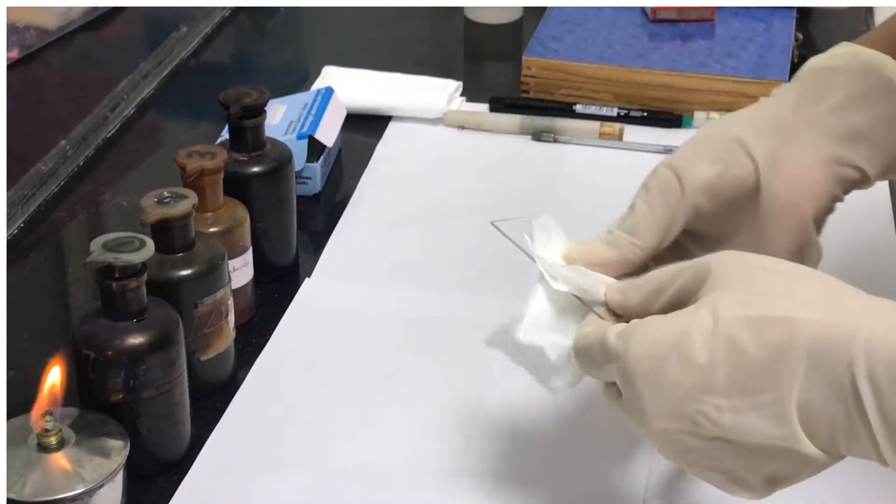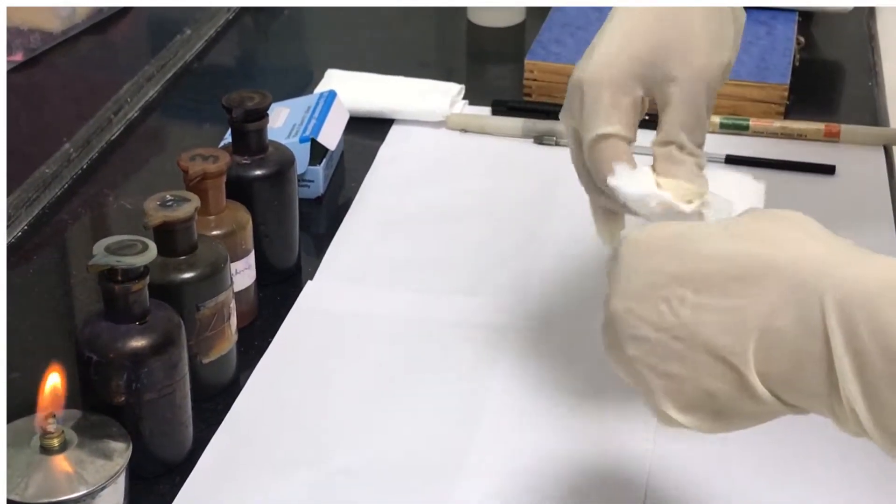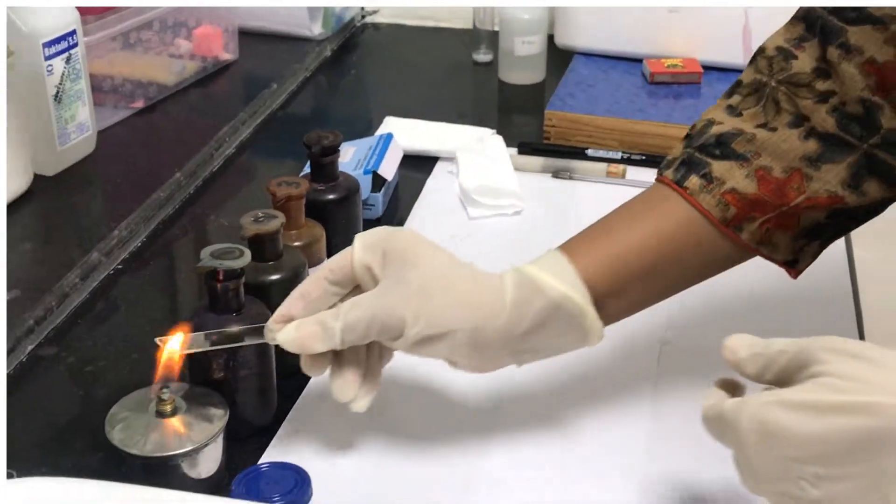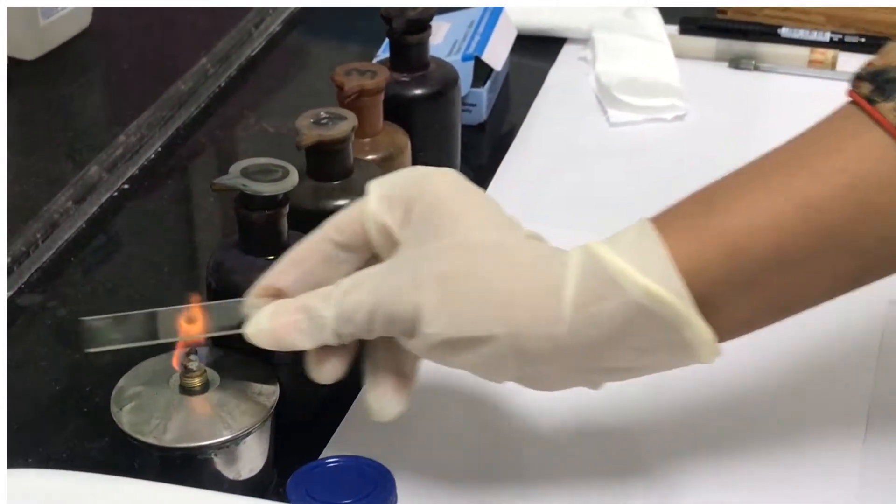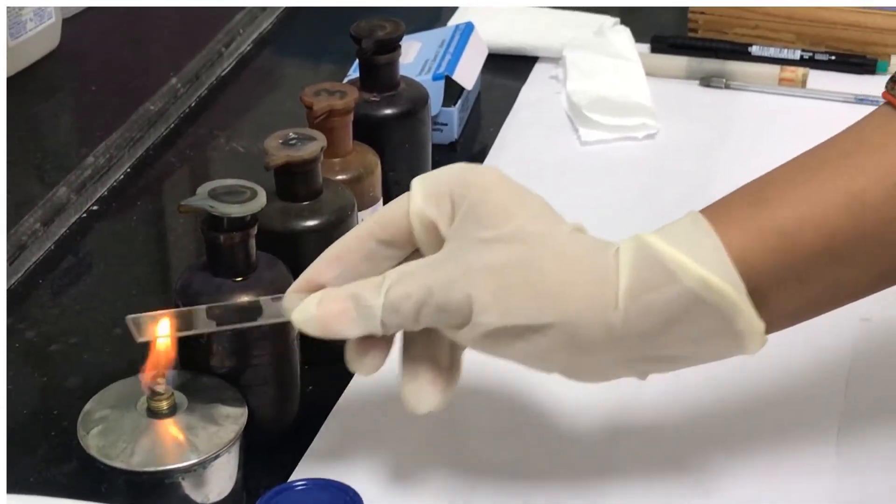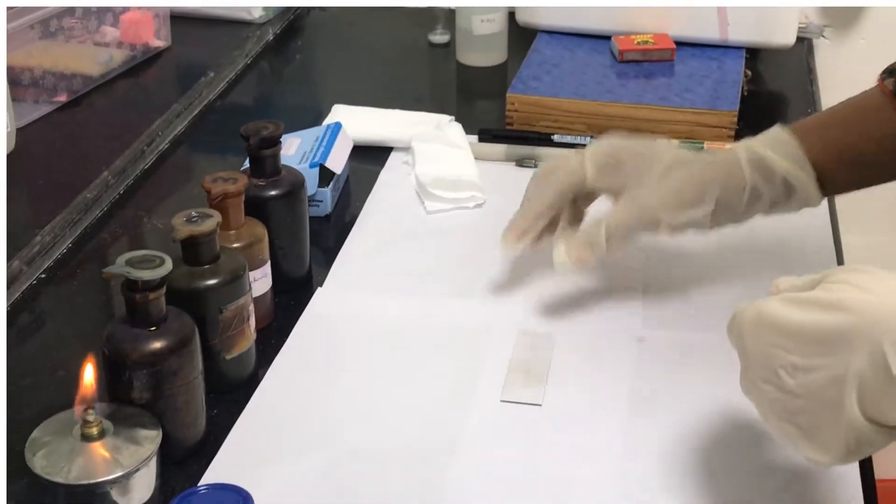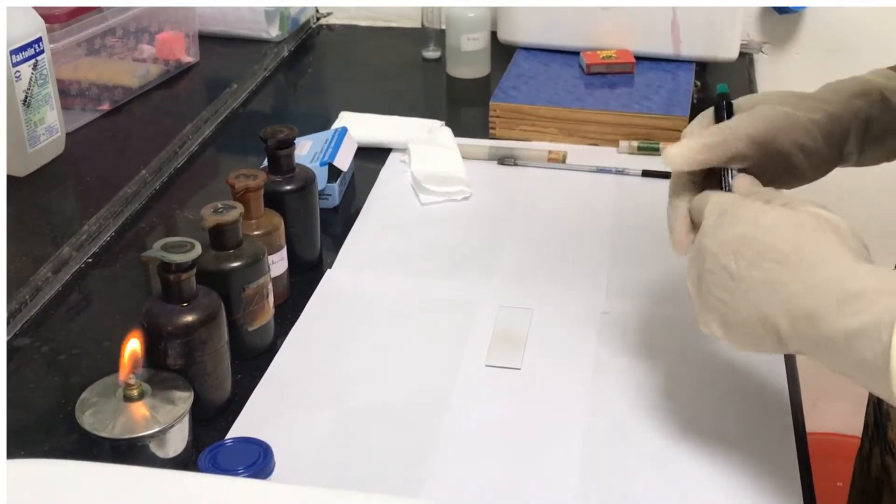We clean the glass slides with blotting paper and make it sterile by passing it through the Bunsen flame three or four times, then label the slide by drawing a circle using a marking pen.